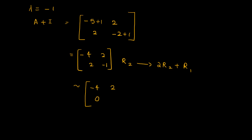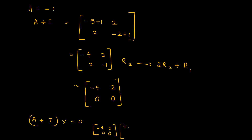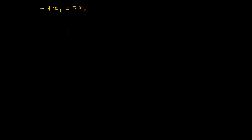That gives [0, -2 plus 2] which is [0, 0]. So A plus I into x equal to 0 becomes the matrix [-4, 2; 0, 0] into x equal to 0. From the first row, minus 4x1 plus 2x2 equal to 0, so minus 4x1 equal to minus 2x2, giving x1 equal to x2 over 2.